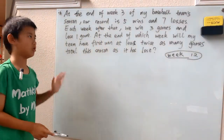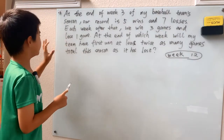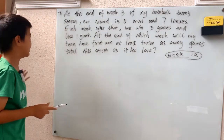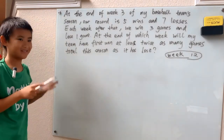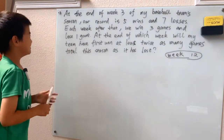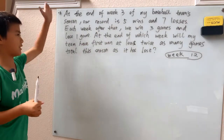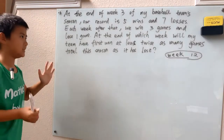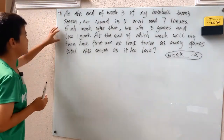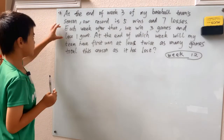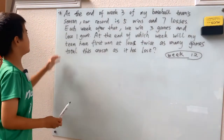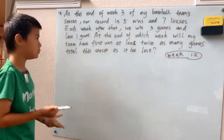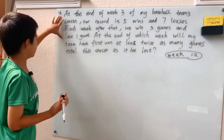For the smarter method, we're going to assign a variable. There are really only two key pieces of information in this problem. The first piece — the week three record — gives us everything we need: the week number, the wins, and the losses. So let's focus on the second piece of information.